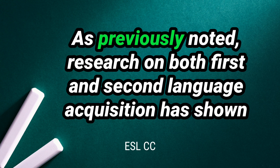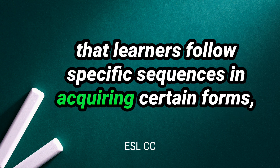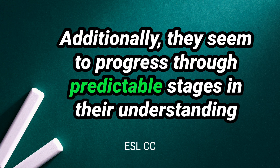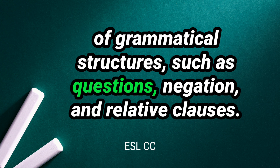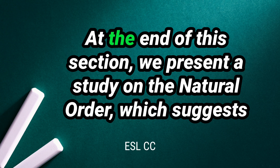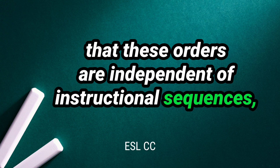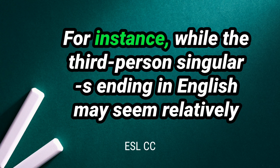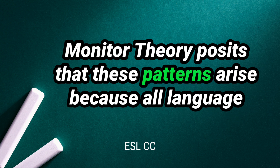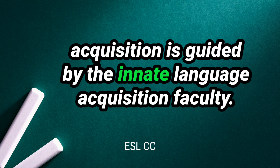The Natural Order Hypothesis. Research on both first and second language acquisition has shown that learners follow specific sequences in acquiring certain forms, such as the grammatical morphemes -ing, -ed, -s, and others. Additionally, they seem to progress through predictable stages in their understanding of grammatical structures, such as questions, negation, and relative clauses. These findings have been taken as evidence for the natural order hypothesis. These orders are independent of instructional sequences or even the complexity of the structures being acquired. For instance, while the third-person singular -s ending in English may seem relatively straightforward, it has proven challenging for L2 learners, even those with advanced proficiency. Monitor theory posits that these patterns arise because all language acquisition is guided by the innate language acquisition faculty.